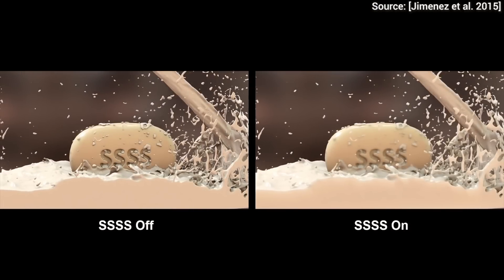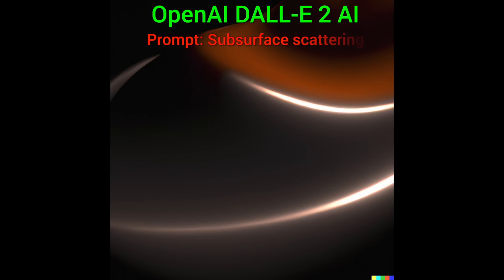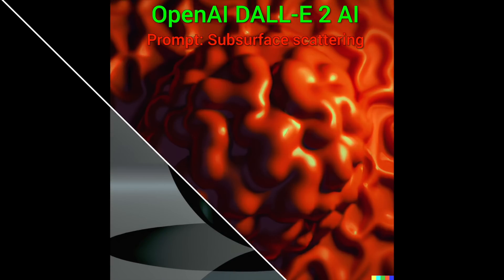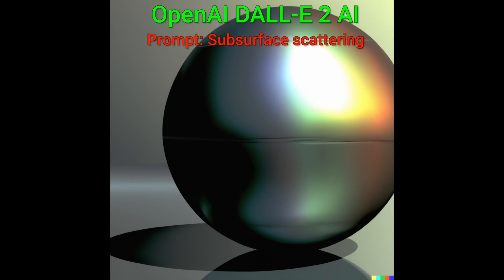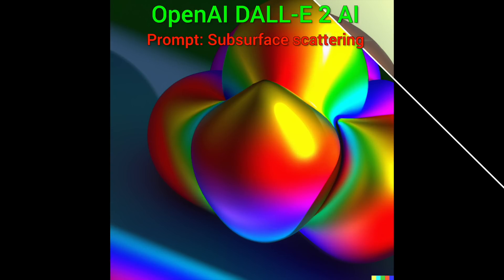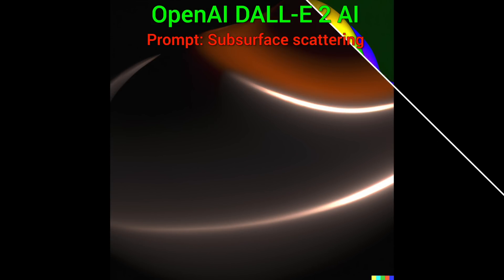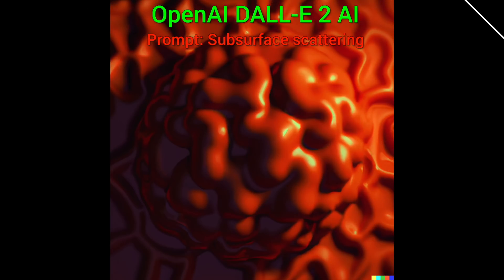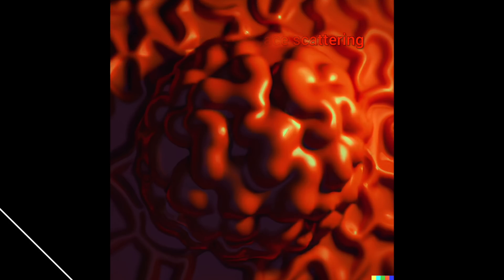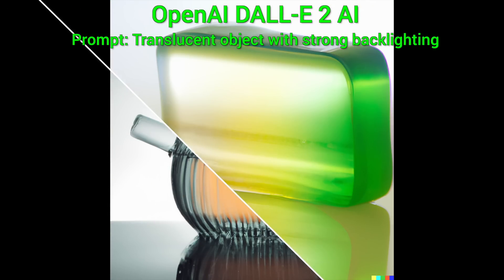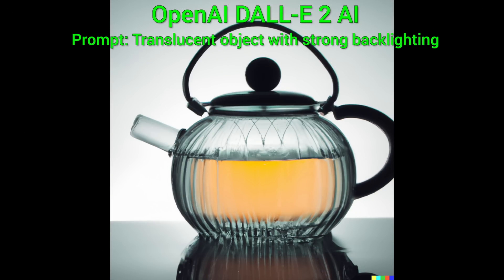So, can an AI pull this off today? That's impossible, right? Well, it seems so — if I plainly ask for subsurface scattering from DALL-E 2, I did not get any of that. However, when prompting a text-to-image AI, we have to know not only what we wish to see, but how to get it out of the algorithm. So, if we ask for translucent objects with strong backlighting — bingo! DALL-E 2 can do this too! So good!